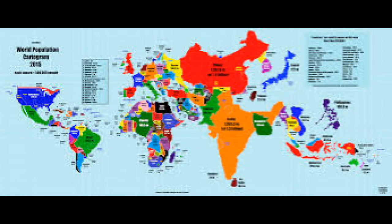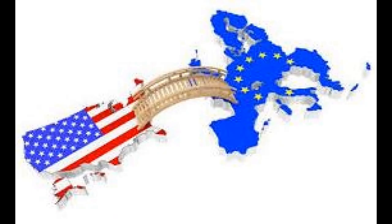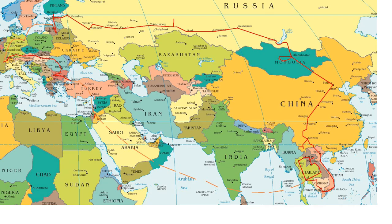At the beginning of the 20th century, the world had a population of 1.6 billion people. During this period, the world was divided into two groups: the West and the Rest. The West refers to western countries like European nations and American nations, and the Rest refers to African countries, Asia, and Oceania.